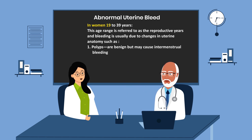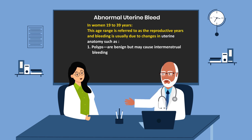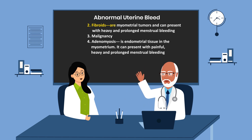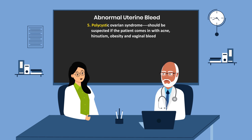In women 19 to 39 years — the reproductive years — bleeding is usually due to changes in the uterine anatomy. Such changes may include polyps, which are benign but may cause intermenstrual bleeding; fibroids, which are myometrial tumors that can present with heavy and prolonged menstrual bleeding; malignancy; and adenomyosis, which is endometrial tissue in the myometrium, presenting with painful, heavy, and prolonged menstrual bleeding.